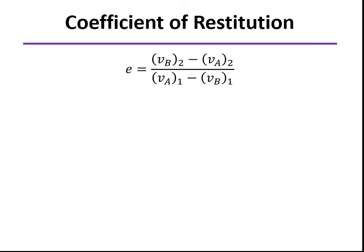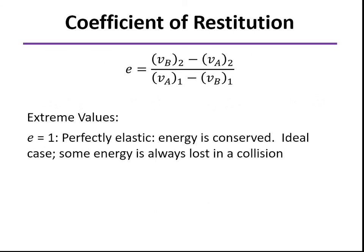Now the coefficient of restitution, as we learned earlier, can vary between zero and one. In the case of one, we call that a perfectly elastic collision. In that case, mechanical energy is conserved. We always lose some mechanical energy in a collision, so in a real-life collision, that value is always going to be less than one.